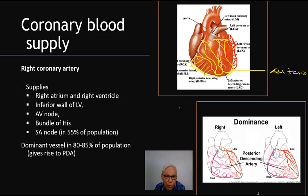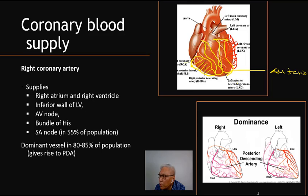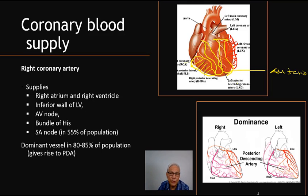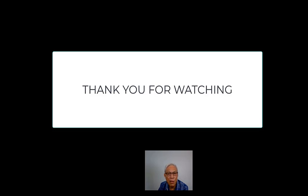The inferior portion of the myocardium is supplied by the right coronary artery. In summary, the left coronary artery supplies the lateral, septal, and anterior portions of the myocardium, while the right coronary artery supplies the inferior portion of the left ventricle. That concludes the discussion on coronary circulation.